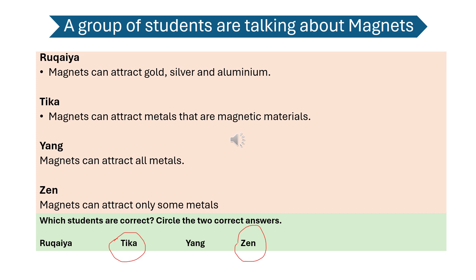A group of students are talking about magnets. Rukhaya says magnets can attract gold, silver, and aluminium. Ticka says magnets can attract metals that are magnetic materials. Yang says magnets can attract all metals. Zen says magnets can attract only some metals. Which students are correct? Ticka and Zen both say the correct sentences about magnets.